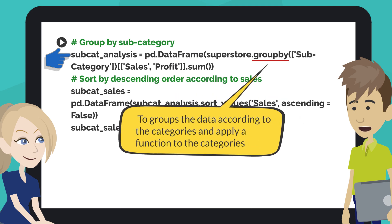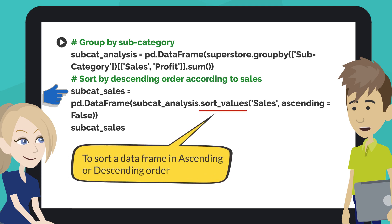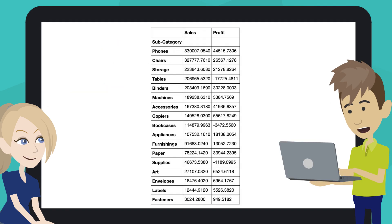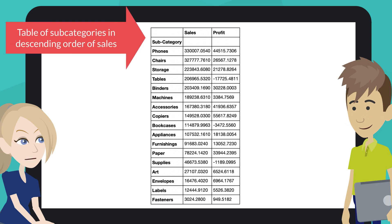Pandas DataFrame.groupBy function groups the data according to the categories and applies a function to the categories. This code sorts by descending order according to sales. Pandas sort_values function sorts a data frame in ascending or descending order of the past column. Ascending is a boolean value which sorts the data frame in ascending order if true. We can now see a table of subcategories in descending order of sales.